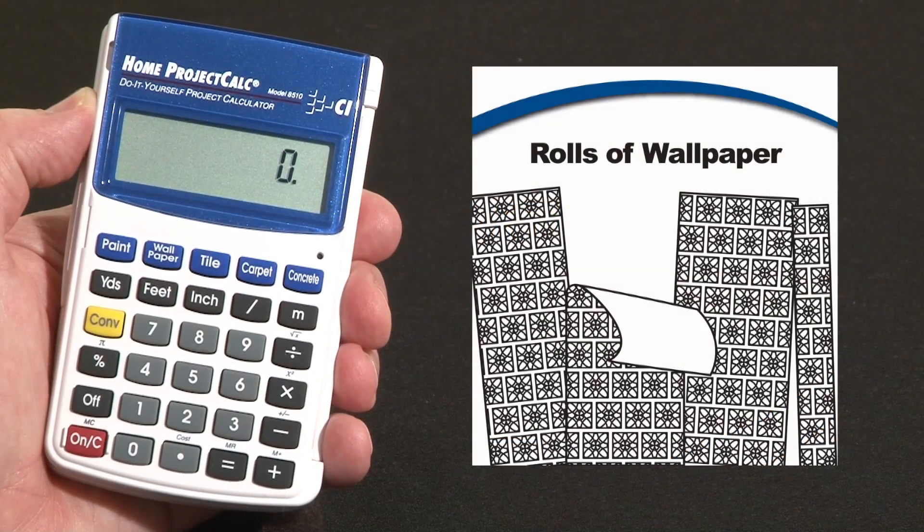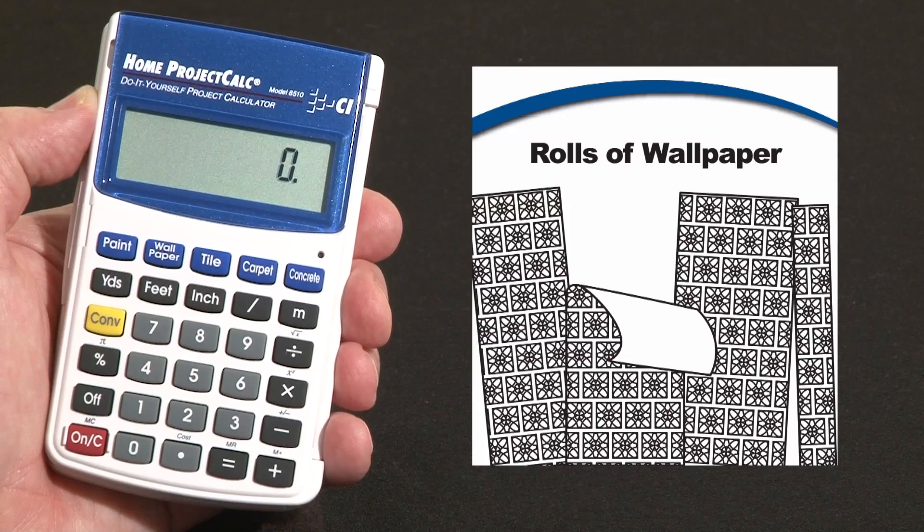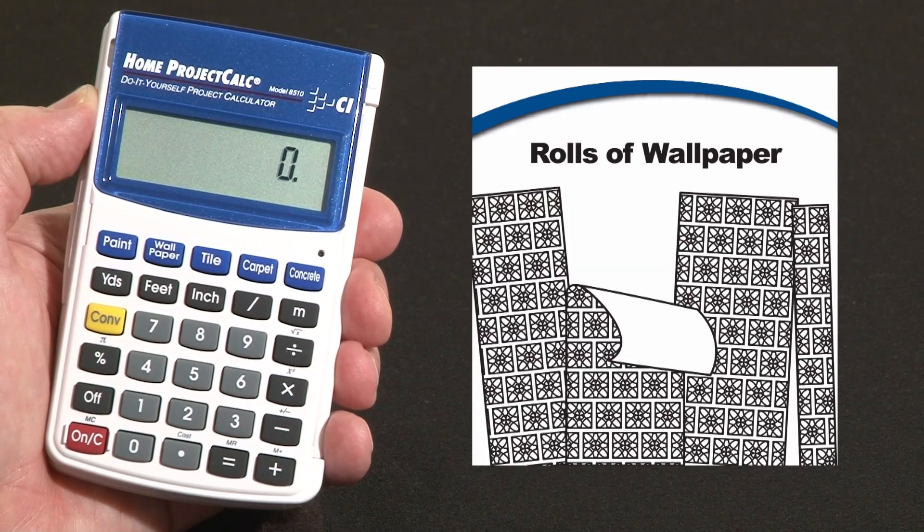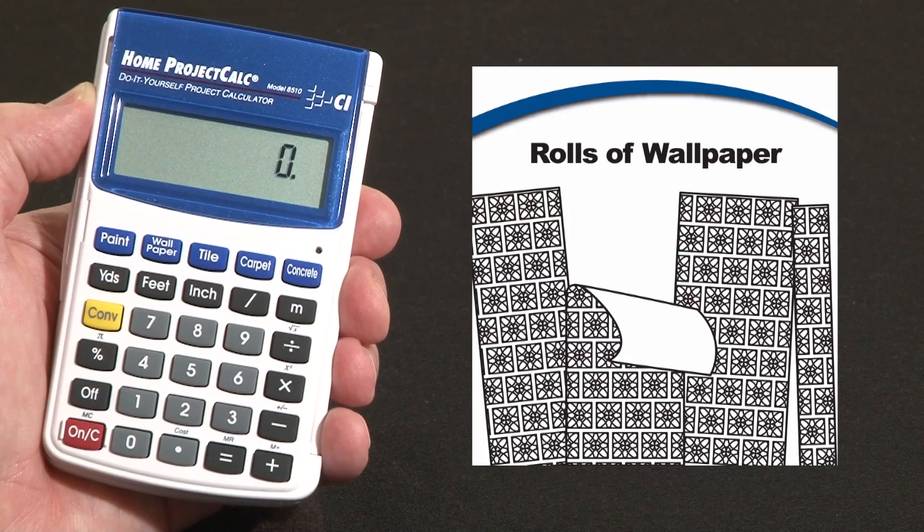Now let me show you how to use your Home Project Calc's built-in wallpaper function to determine how many rolls of wallpaper you need to cover any area. The coverage default is 56 square feet per roll, American double rolls.